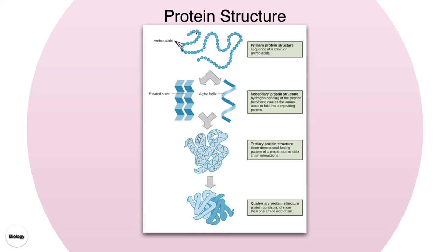The amino acid sequence forms the primary structure, but how those amino acids interact with each other forms the secondary protein structure. This gives us either beta pleated sheets or an alpha helix — you can imagine one side of a DNA molecule as a helix. The alpha helix is due to hydrogen bonding between the amino acids. From our beta pleated sheets and alpha helices, we can get a more complex structure called tertiary structure.